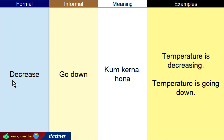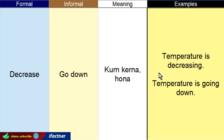Toh pehle word pair hai: decrease aur go down. In dono words ka meaning hai kam kerna ya kam hona. Lekin decrease jo hai wo formal English word hai, aur go down jo hai wo hum informal environment mein use karenge. Jaisay agar TV par jo hai weather forecaster aap ko weather ke baare mein bata raha hai, toh wo kehega 'temperature is decreasing' ke derja haraarat kam ho raha hai, kyunki sardiyan aa rahi hain. Lekin agar mein dost ke saath baat ker raha hoon, toh mein kahoon ga 'temperature is going down'. Toh temperature is going down hum nay informal environment mein use kiya.